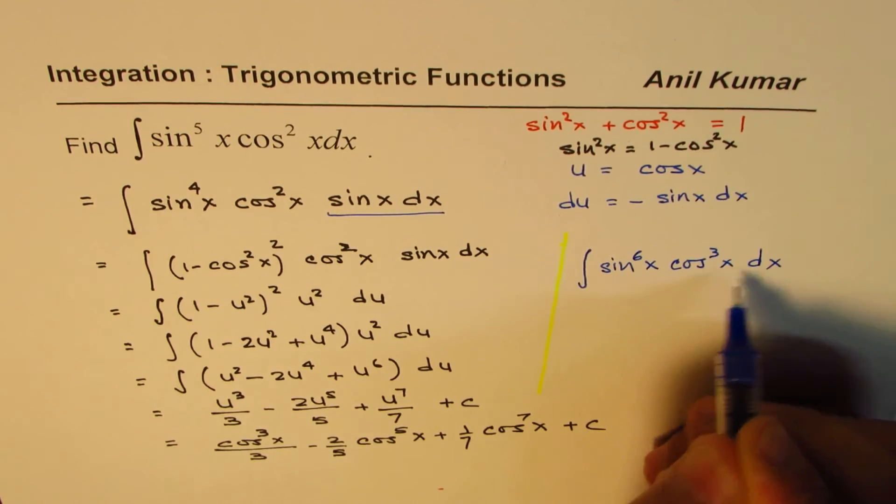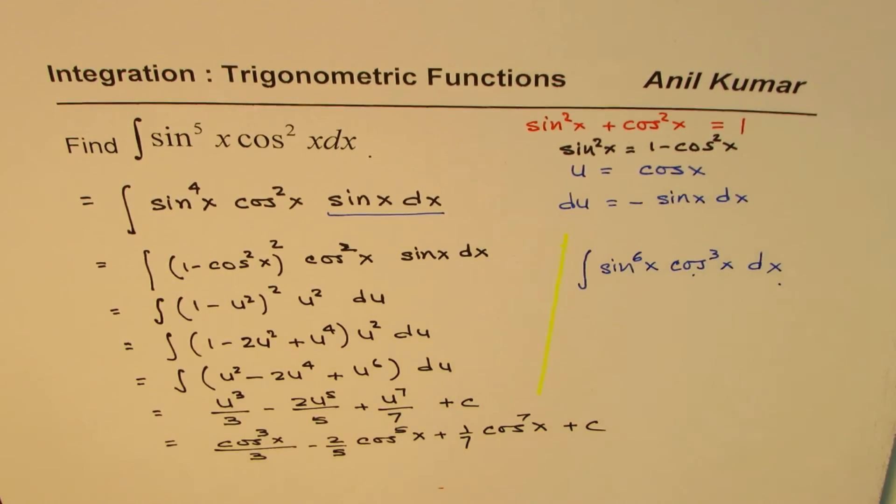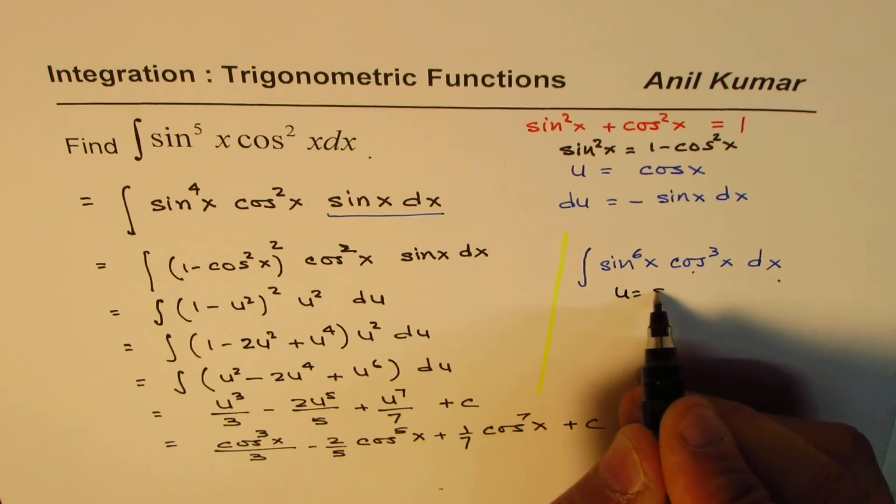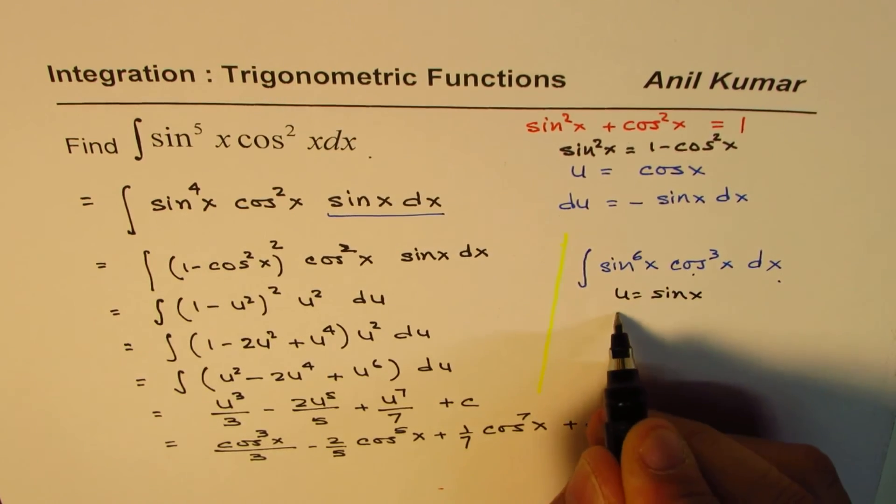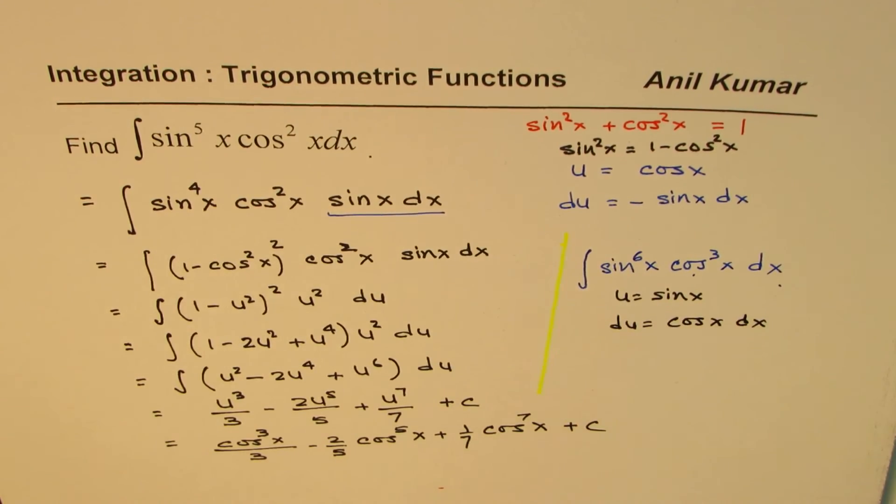Now what should you do in this? You have to keep one cos aside. That means u should be sine x. So substitute u equals to sine x. So you'll be du equals to cos x dx. And then you should be in a position to solve this question.